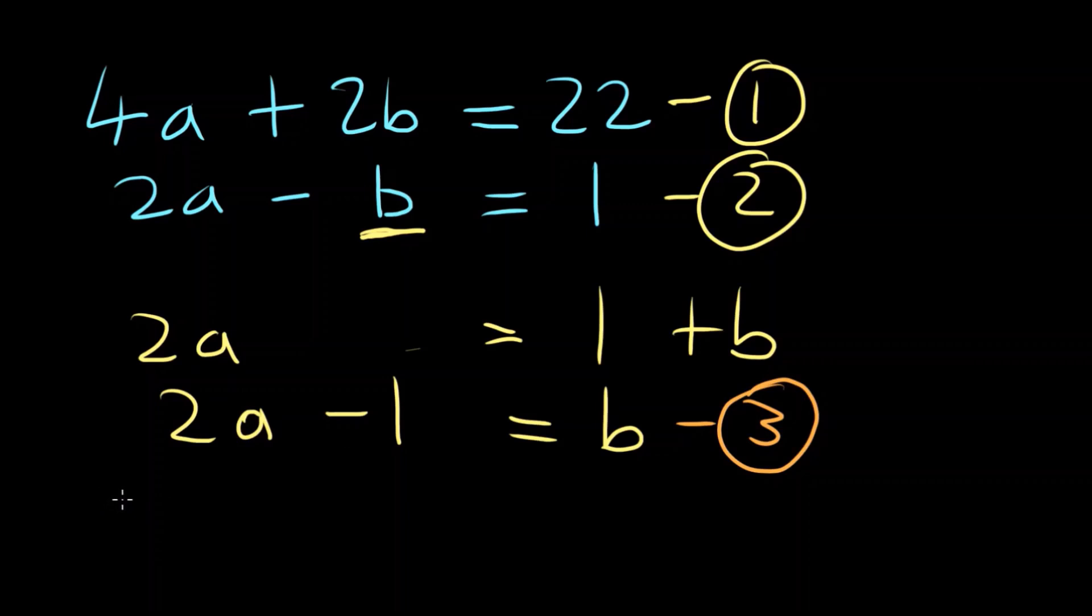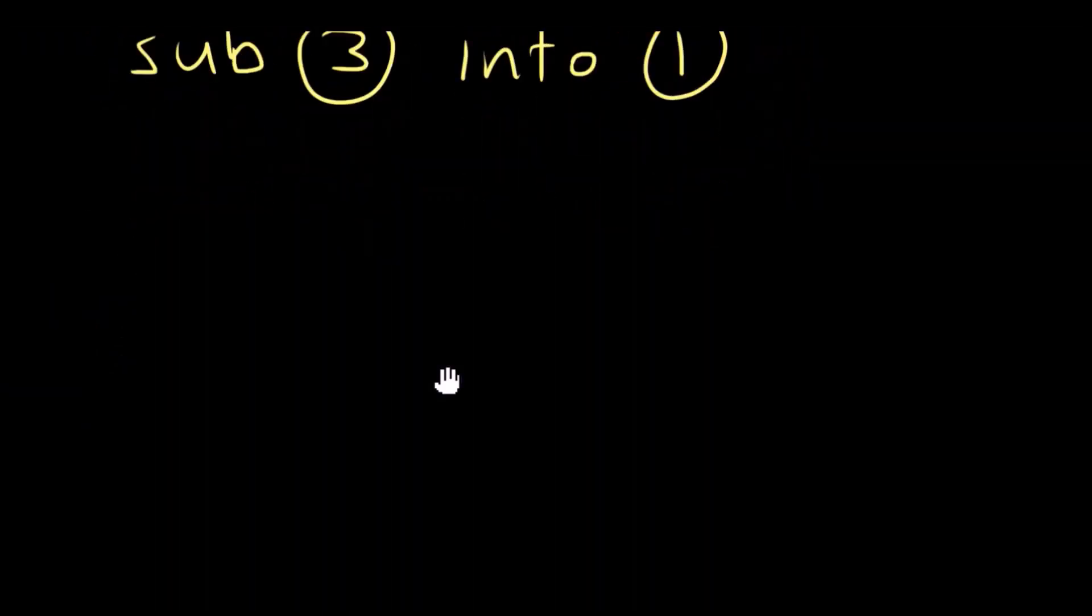The next step would be to substitute equation 3 into 1. Because we rearranged 2, we'll have to substitute it into the other equation. So what that means is instead of writing 4a plus 2b equals 22, we would write 4a plus 2 times 2a minus 1 equals 22.